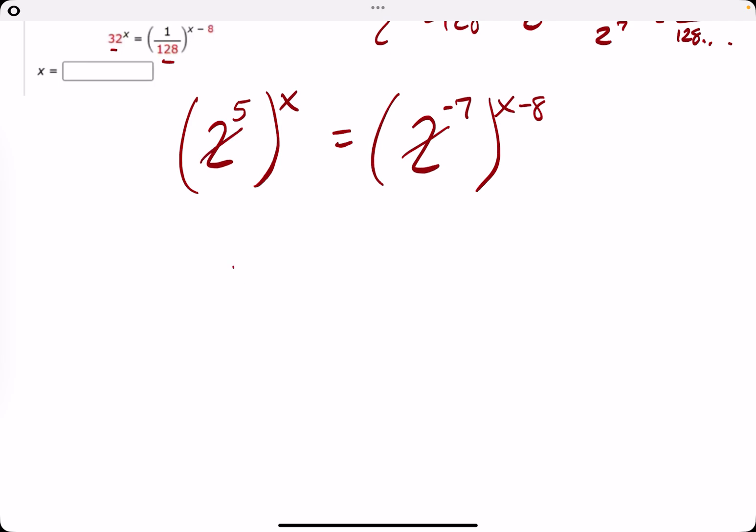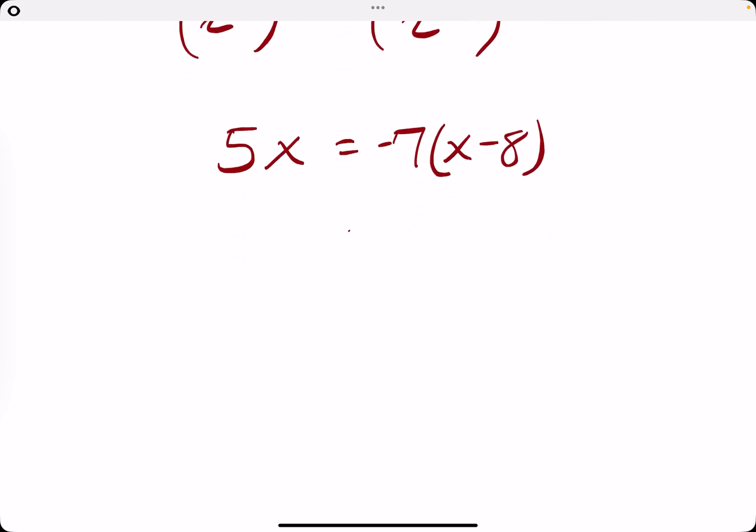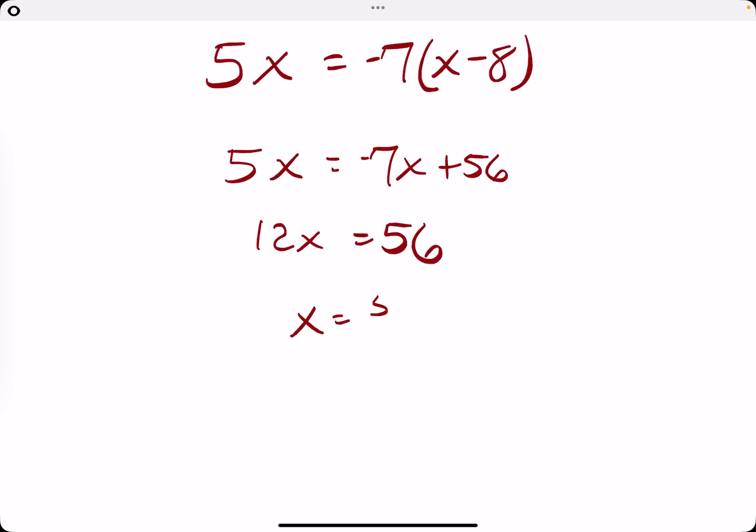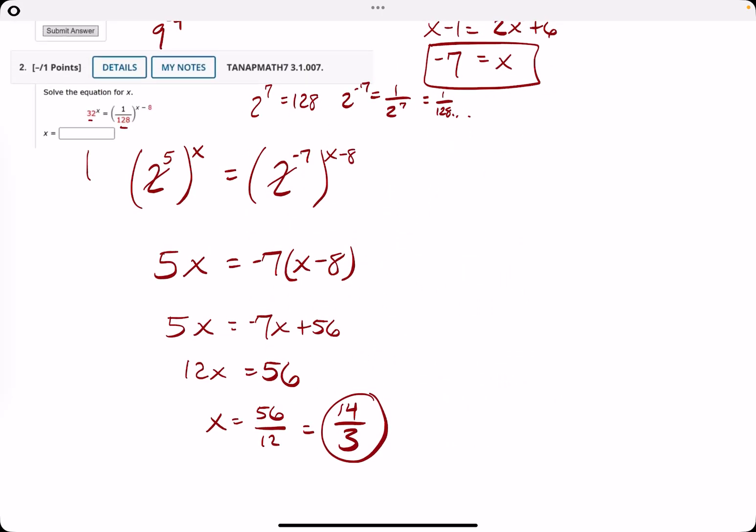We have the 2's cancel out. So we're left with 5x equals negative 7 times x minus 8. We distribute the negative 7, we get negative 7x plus 56. We add 7x, we get 12x equals 56. Divide by 12, you get 56 over 12, and that is equal to, you can divide both by 4, to get 14 over 3.